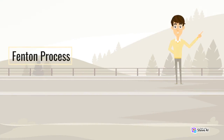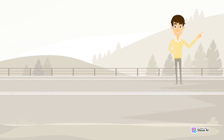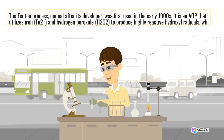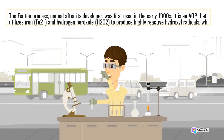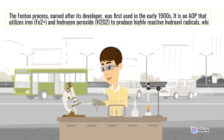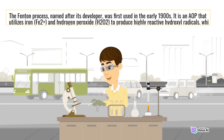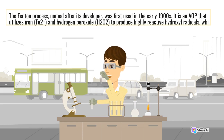The Fenton process, named after its developer, was first used in the early 1900s. It is an AOP that utilizes iron, Fe2+, and hydrogen peroxide, H2O2, to produce highly reactive hydroxyl radicals,